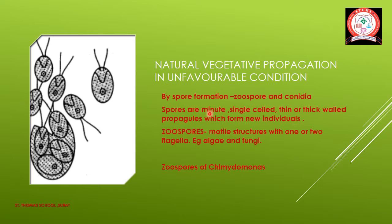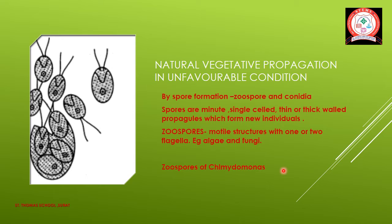Zoospores are motile structures with one or two flagella. Examples: algae and fungi. The example given is zoospores of Chlamydomonas, which is an algae. In Chlamydomonas, the zoospores contain flagella; with the help of the flagella they are able to move.